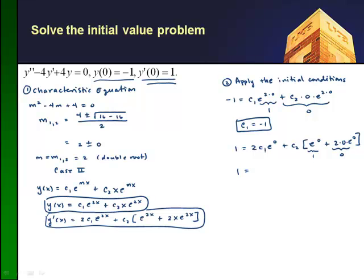So I end up with 1 equals 2c1 e to the 0, which is 1, plus c2 times e to the 0, which is 1. So I recall c1 from above: I'll get 1 equals 2 times negative 1 plus c2, or c2 is equal to 3.